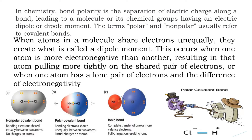Moving to the case of HCl: the electron of hydrogen and the electron of chlorine are shared to form a covalent bond. But chlorine is more electronegative than hydrogen, so chlorine will pull the shared pair of electrons towards its side. As a result, chlorine develops a partial negative charge.